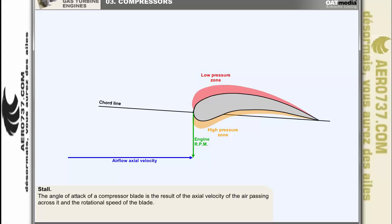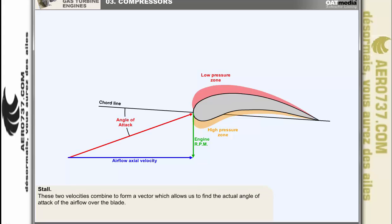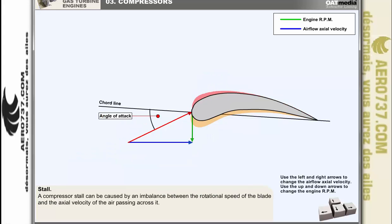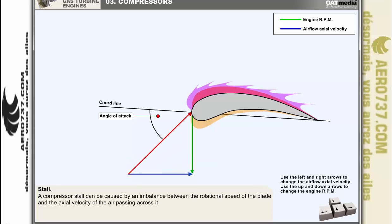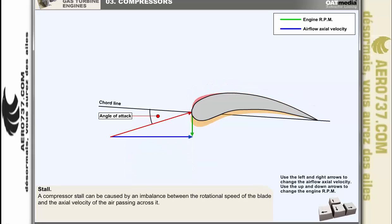Let's examine the phenomenon called stall more closely. The angle of attack of a compressor blade is the result of the axial velocity of the air passing across it and the rotational speed of the blade. The forces of the air's axial velocity and the engine RPM combine to form a vector which allows us to find the actual angle of attack of the airflow over the blade. A compressor stall can be caused by an imbalance between the rotational speed of the blade and the axial velocity of the air passing across it, which can occur for various reasons.